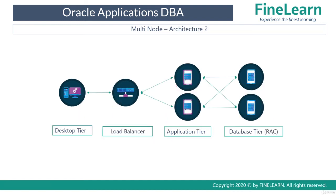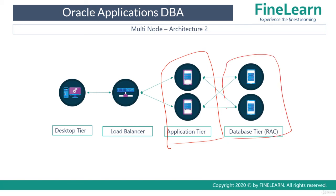This is an example of a high availability deployment. As you can see, the application tier consists of two nodes and the database tier also consists of two nodes. If any of the nodes is not available due to any reason, the other node will still be available for the end users. Similarly, if one of the database nodes is down, the other node will still be available to listen and process the requests.